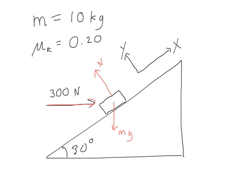Now we know that the friction force ought to be along the slope, but you might wonder whether that force should be pointing upward or downward. Friction is always trying to prevent motion between two surfaces. If there were no friction, the 300-newton force is quite large, so it would overcome the component of weight going down the slope, and the block would move up. So we expect the friction force to point downward, trying to prevent the block from moving upward.